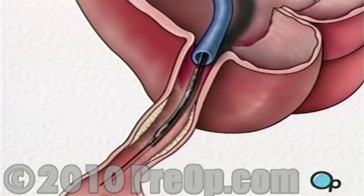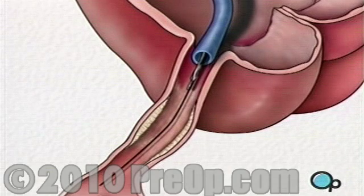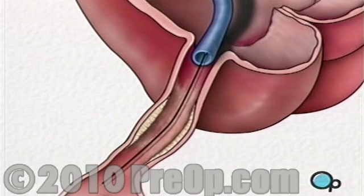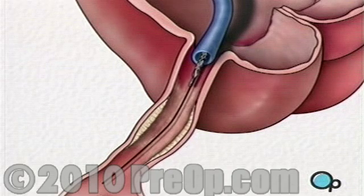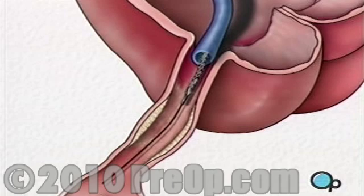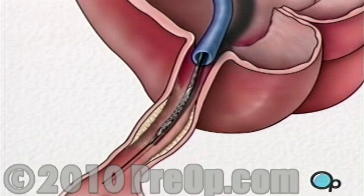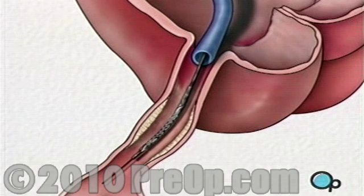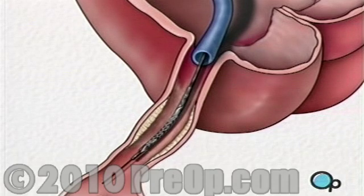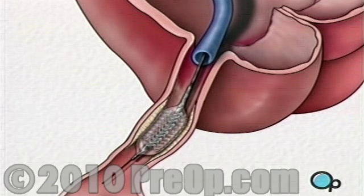The balloon catheter is then withdrawn and another balloon catheter is inserted. This balloon has the mesh stent tube wrapped around it. Once this tube has been placed in the center of the now widened area of the artery, the balloon is briefly inflated. The stent expands until it hugs the walls of the artery.